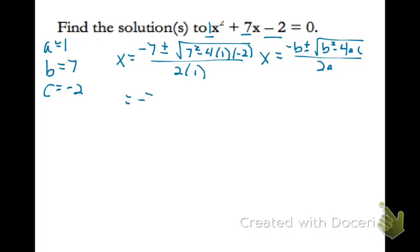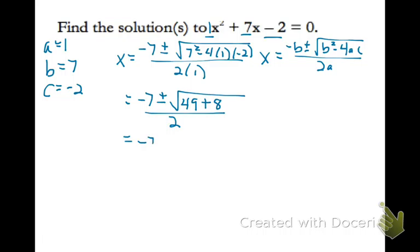Then we just simplify. Bring down the negative 7 and the plus or minus. Underneath the square root, 7 squared is 49. Negative 4 times 1 times negative 2 is positive 8, so I'll have plus 8, all divided by 2 times 1 which is 2. Continuing: negative 7 plus or minus, and then I'll add what's under the square root, which is 57, all divided by 2.